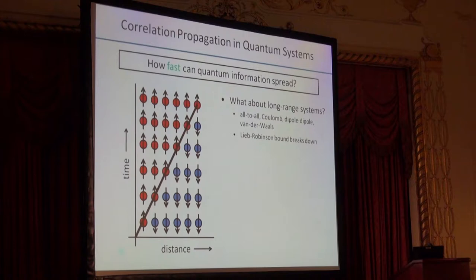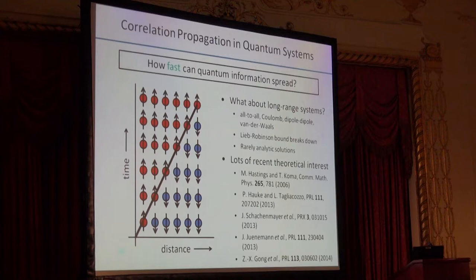Because there are rarely analytic solutions, it's not entirely clear what happens to this light cone edge. Does it stay just as linear unchanged? Does it stay linear but at a faster velocity? Or does it bend over? Not surprisingly, to answer these questions there's been a lot of recent theoretical interest. It's not just theoretical interest. In addition to our group, there's also been another experimental report out of Reiner Blatt's group in Innsbruck.